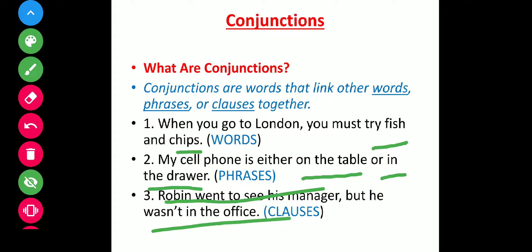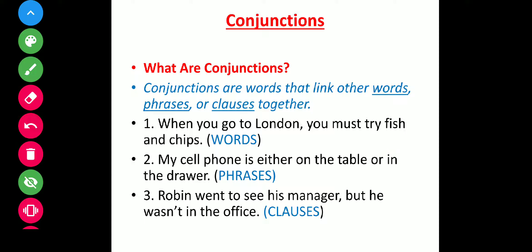Conjunction kya hota hai — ek aisa word jo word ko word ke sath jode, phrase ko phrase ke sath jode, ya clause ko clause ke sath jode. Clause ek group of words hote hain jinka apna ek subject, apna ek predicate, apna ek verb hota hai aur koi meaning nikal ke aata hai. Clause ki further bahut saari types hain jo hum future videos mein discuss karenge.